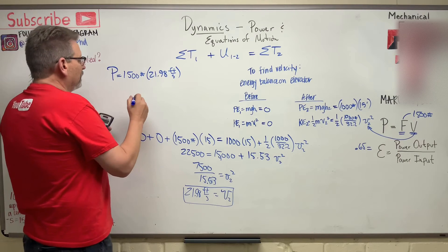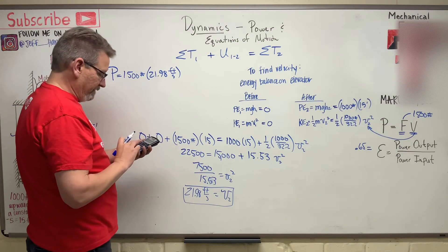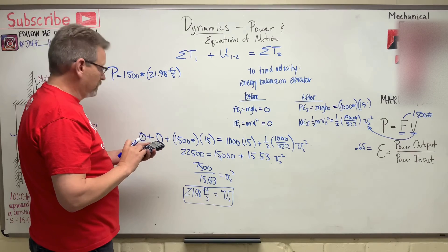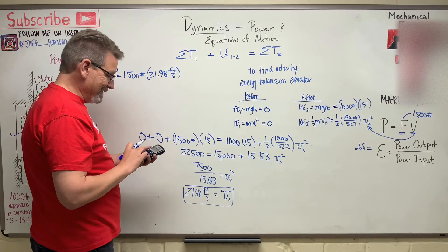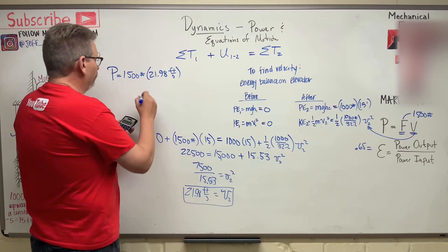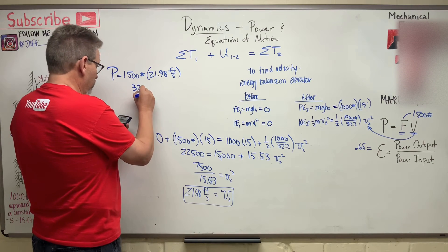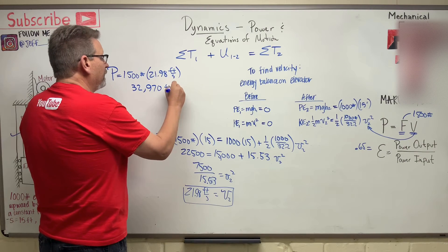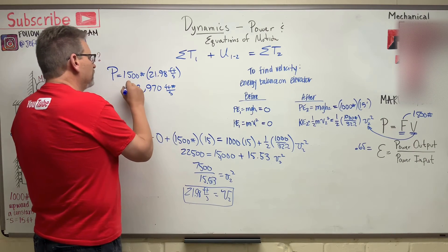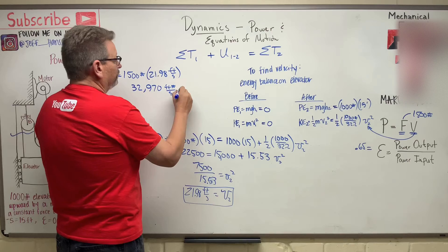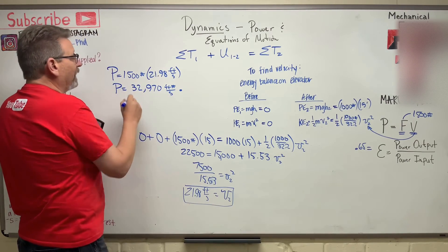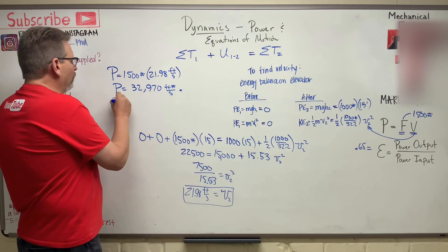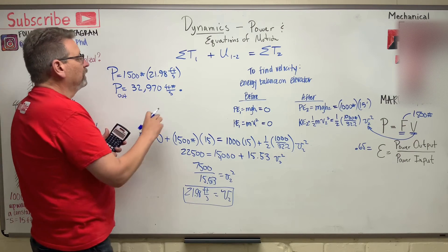So that's, what is that? 1,500 times 21.98 equals 32,970 foot pounds per second. And then what? That's what our power out is. Our output. This is P out, the pout.